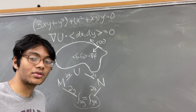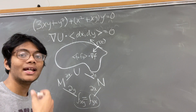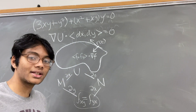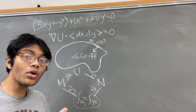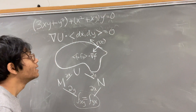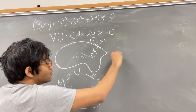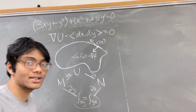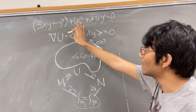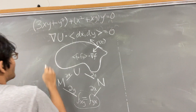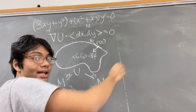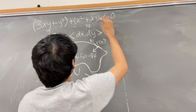If M_y does not equal N_x, we have to solve the differential equation using a different method — linear, homogeneous, exponential, or numerically, which is often the case in real life. Let's go ahead and check: the first thing is to verify whether M_y equals N_x. Here's our M term and here's our N term, so let's check on the right-hand side.